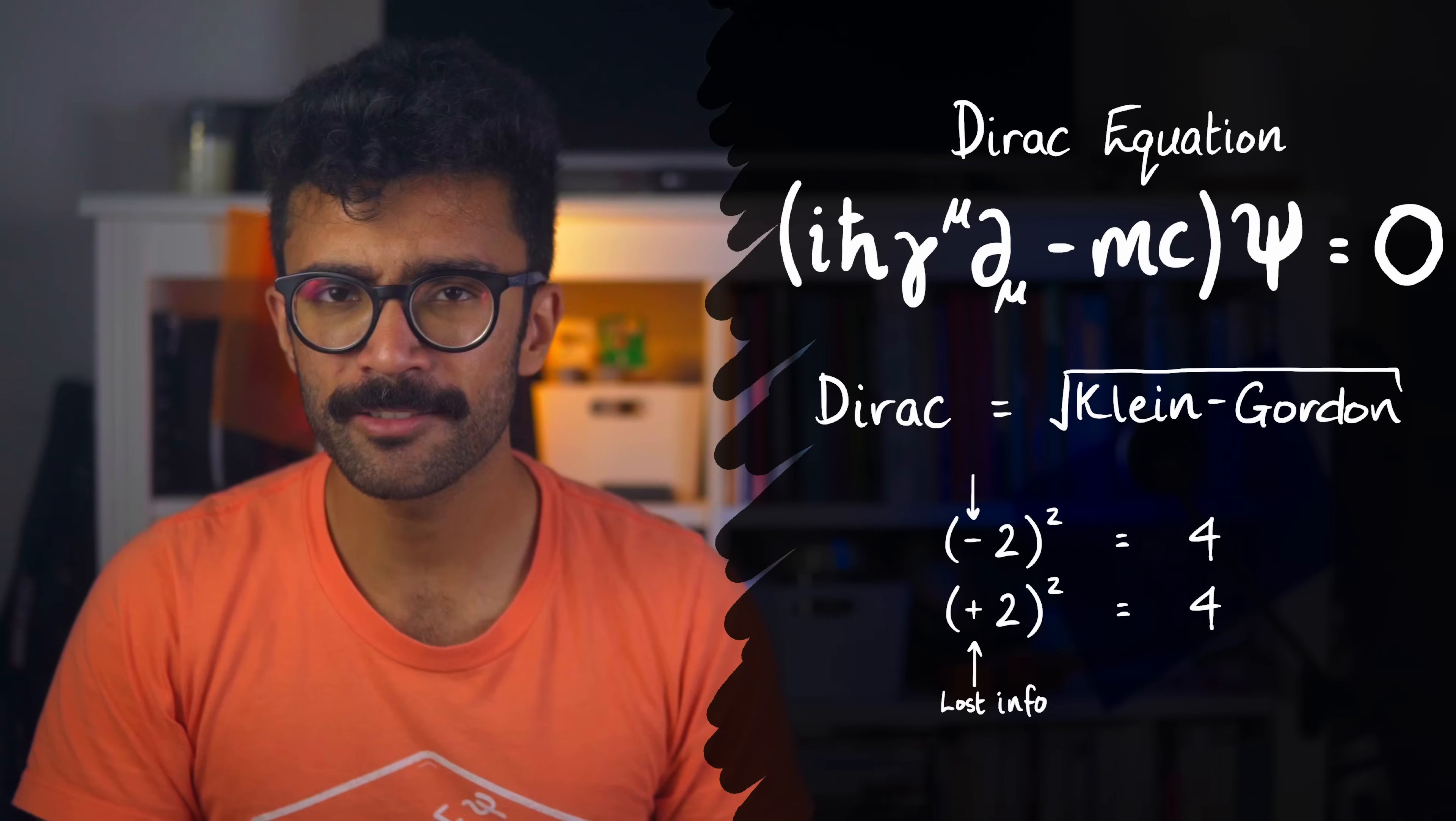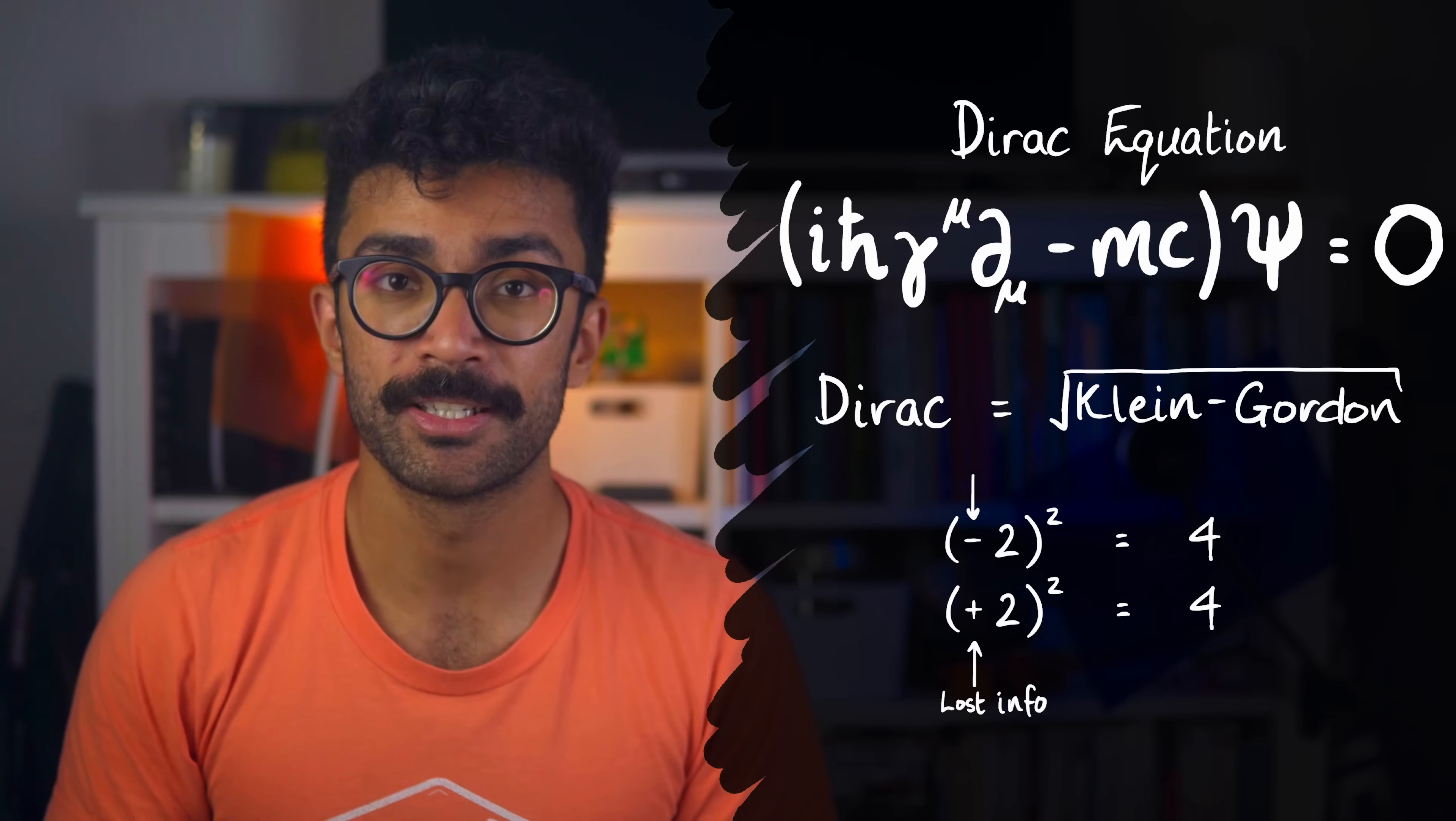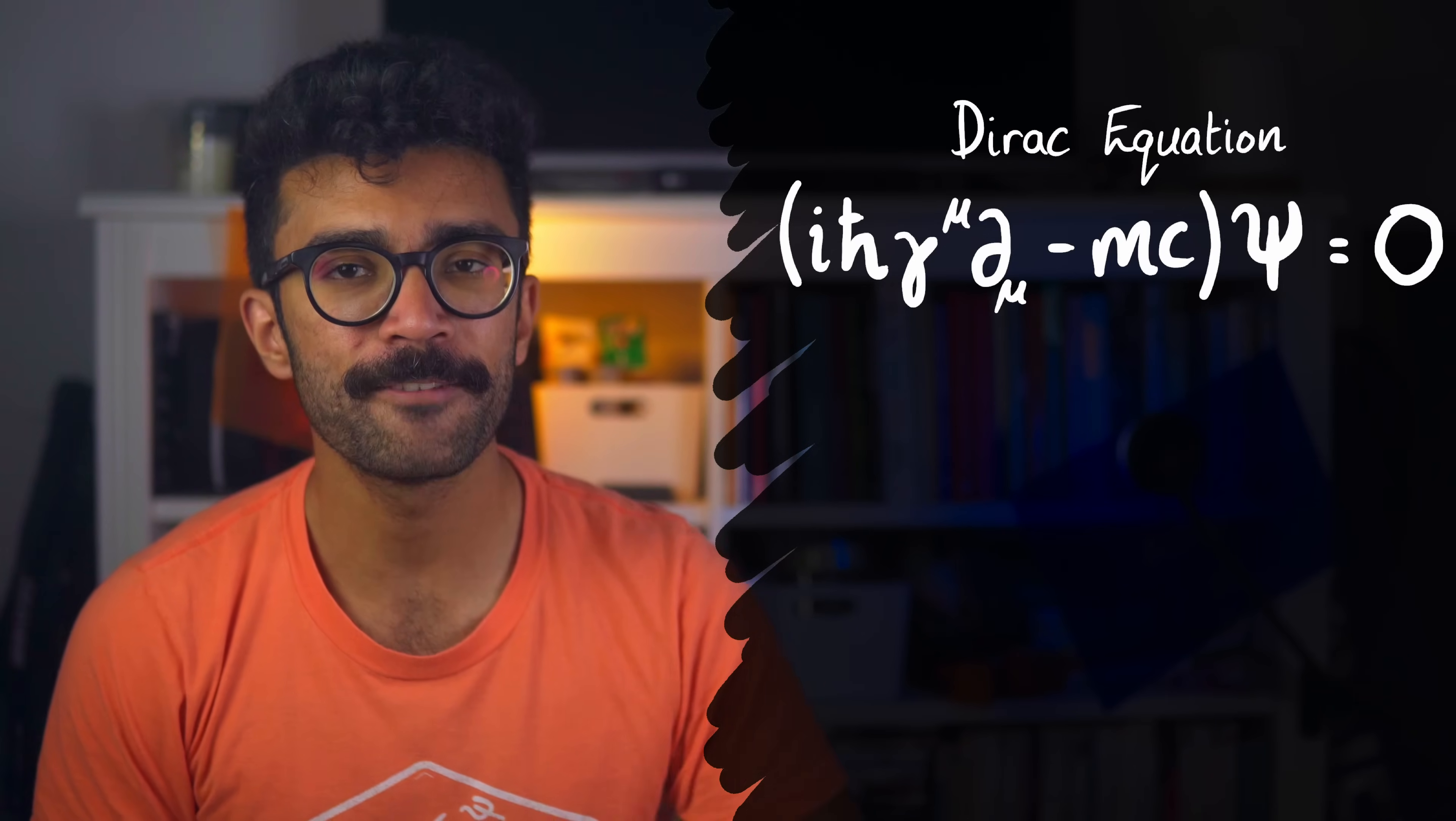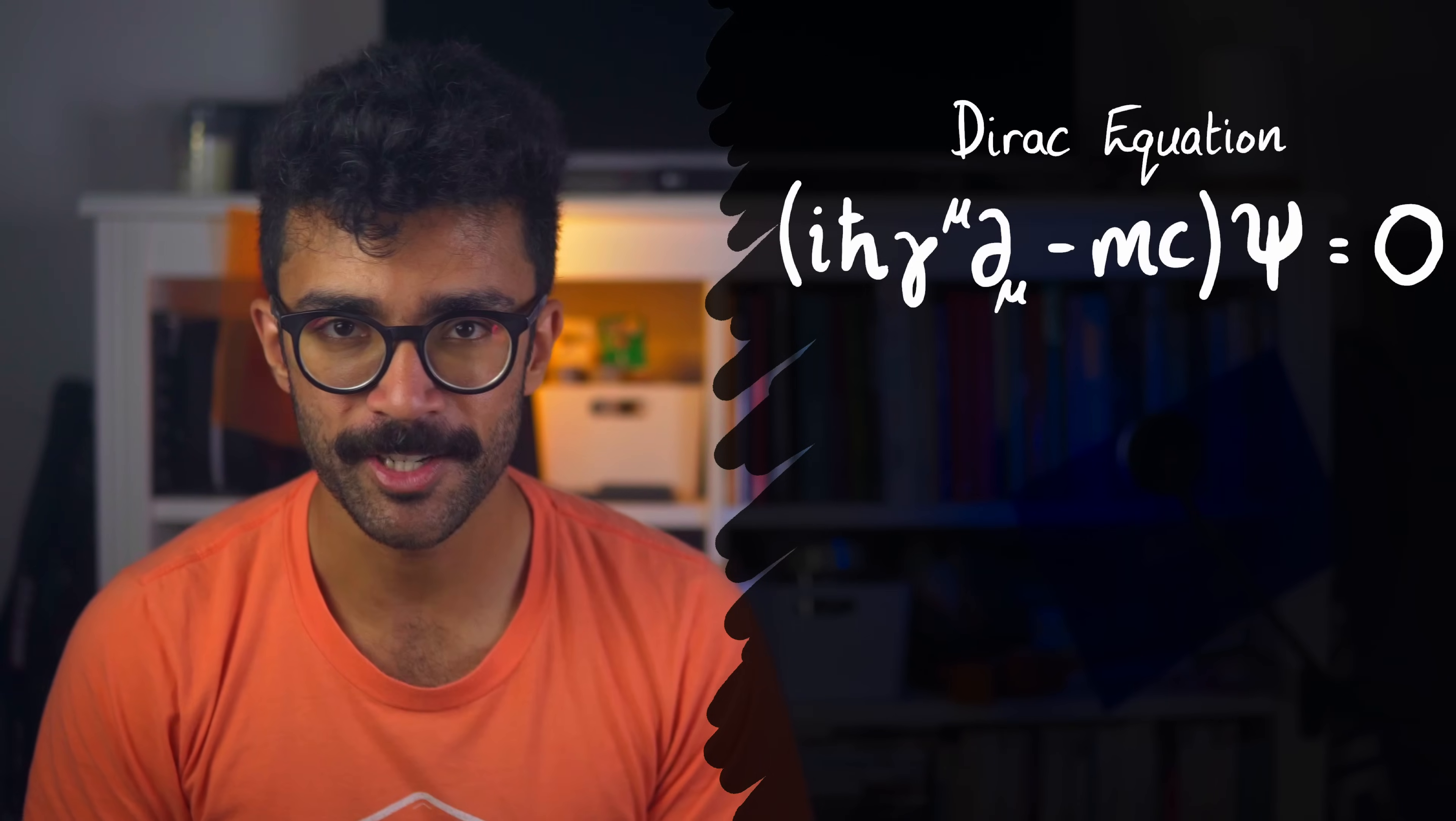However, if we look at the original values themselves, we still have that information. Did we square negative 2 or did we square positive 2? In a similar way, the Dirac equation contains information about spin that is lost when getting to the Klein-Gordon equation. Now I'm going to keep saying this in this video, but that's a very surface level hand wavy explanation, but it does give us a good feel and a good analogy for how the Dirac and Klein-Gordon equations relate to each other.